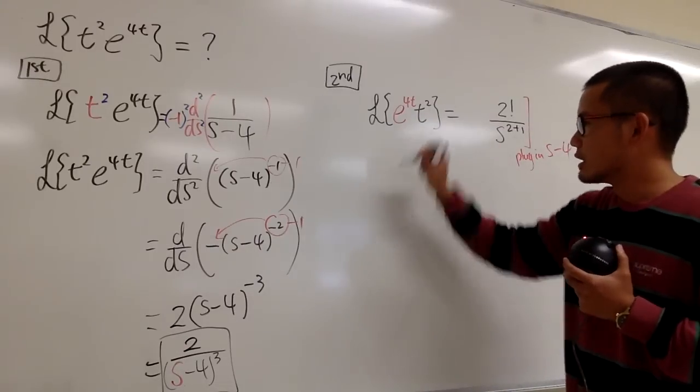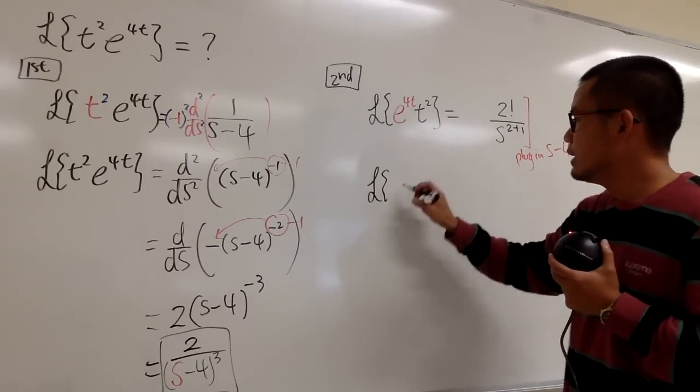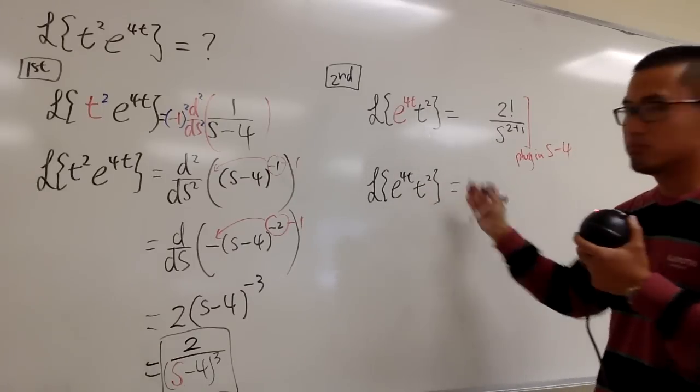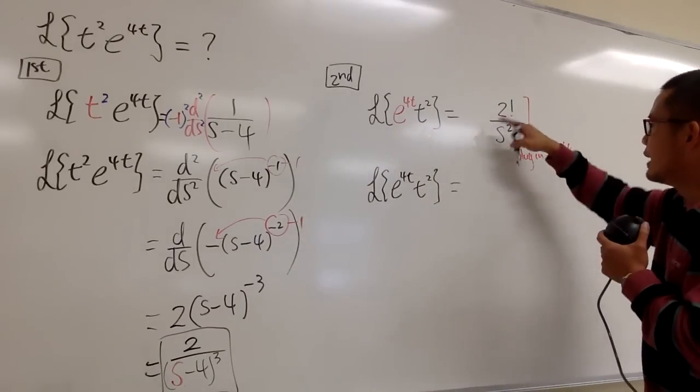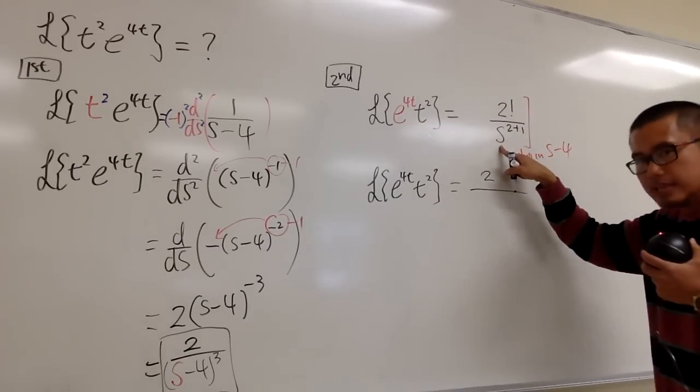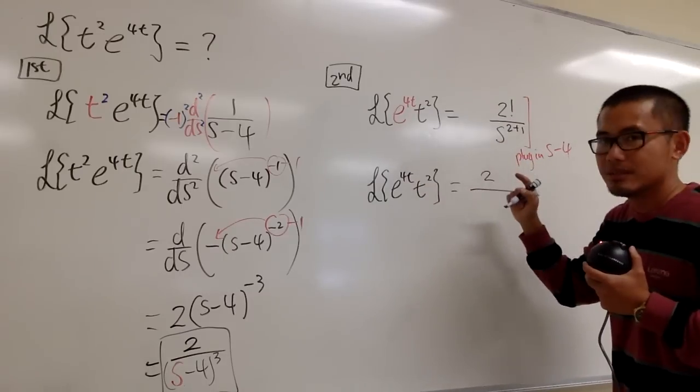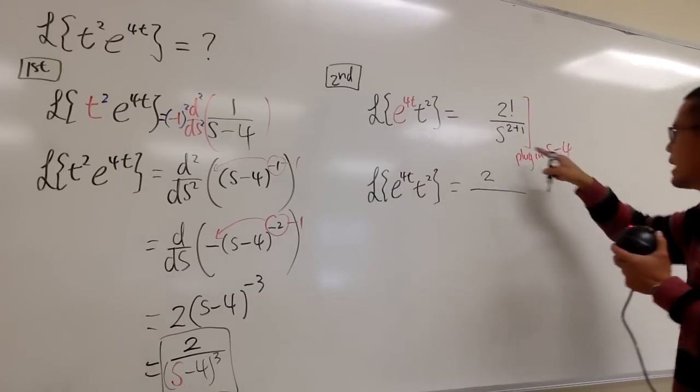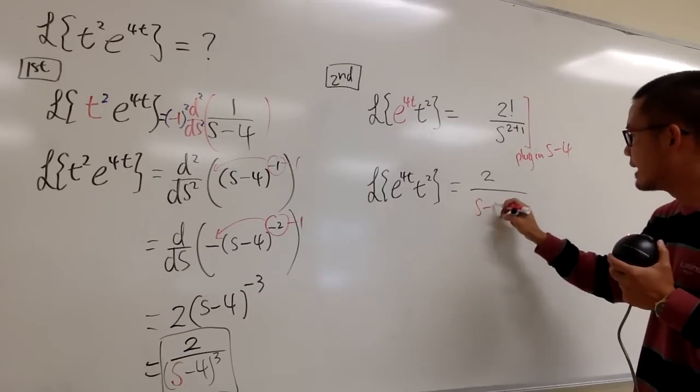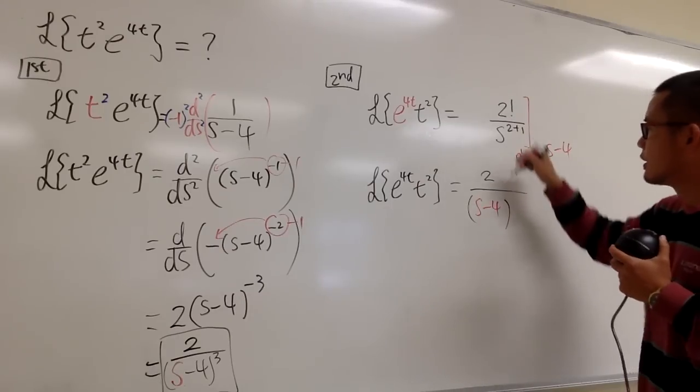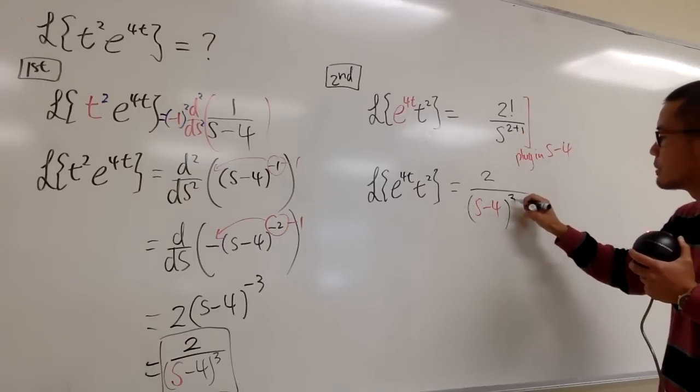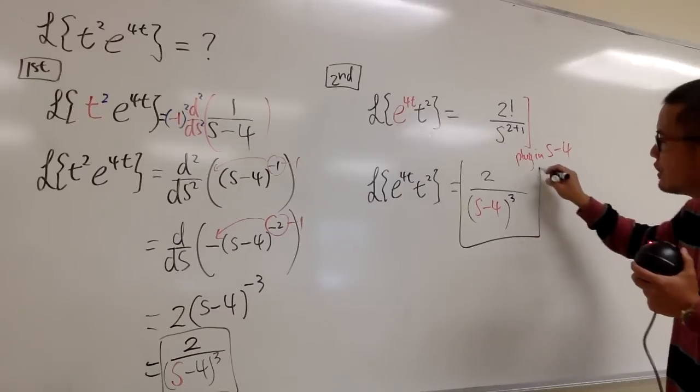So I will show you the Laplace transform e to the 4t. Of course, the order of multiplication doesn't matter. Anyway, right here, 2 factorial is just 2 over, this is s originally, if I didn't have e to the 4t. But now, since I do, I will plug in s minus 4 into this s. So I will have s minus 4. All right? Raised to the 2 plus 1, which is, of course, the third power. And guess what? We are done.